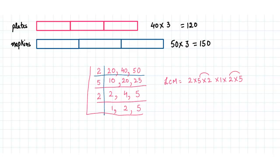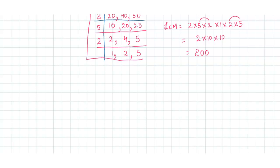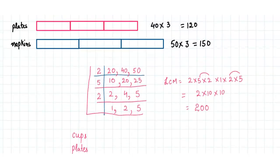This makes a 10, this makes a 10, and we have a 2. So that means 2 times 10 into 10, which is equal to 200. That means we have to buy 200 cups, plates, and napkins.